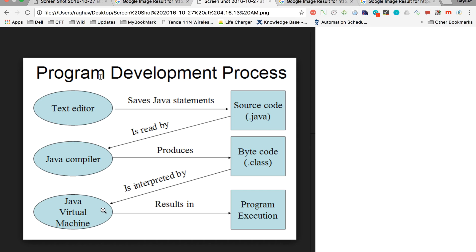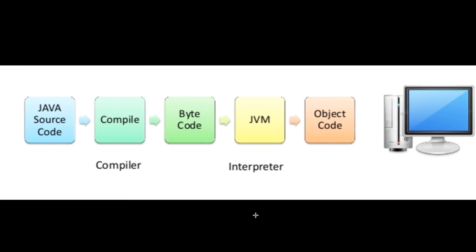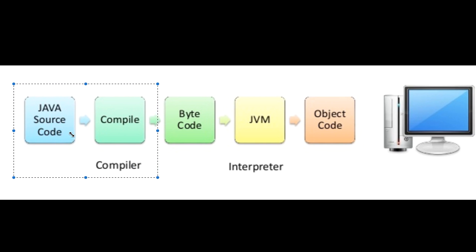Finally when we execute it, the Java Virtual Machine or JVM interprets our byte code, reads it line by line, and converts it into the object code of the machine, and our program gets executed. At a high level: we have our Java source code, we compile it, it converts to byte code, JVM reads and interprets it, converts to object code, and finally executes it. The tools and libraries required to develop and compile Java programs are present inside JDK.